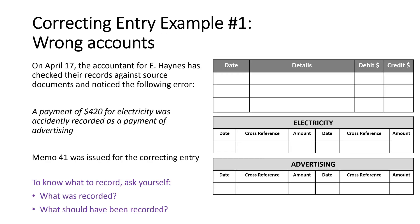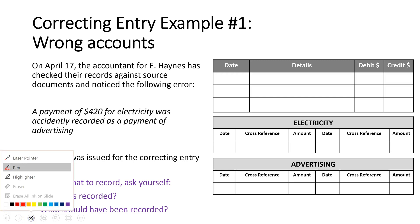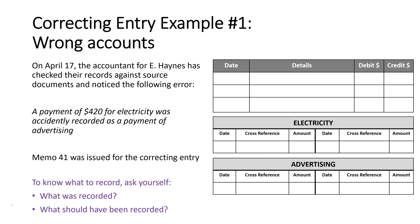Here's our first example. On the 17th of April, the accountant for E Haynes checked their records against source documents and noticed the following error. Memo 41 was issued for this correcting entry. The error was that a payment of four hundred and twenty dollars for electricity was accidentally recorded as a payment of advertising.